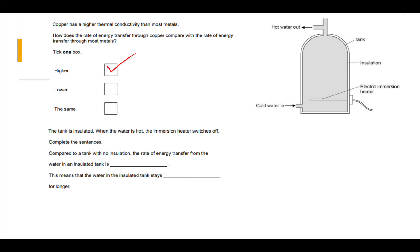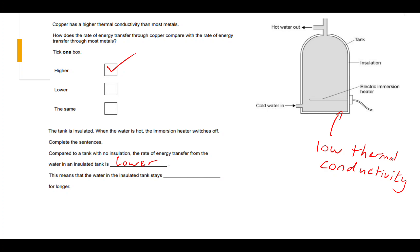The tank is insulated. When the water is hot, the immersion heater switches off. The immersion heater is what heats the water in your house. Compared to a tank with no insulation, the rate of energy transfer from the water in an insulated tank is lower — because the insulation surrounding it, like a jacket that goes over your tank, has a low thermal conductivity. So the rate of heat transfer out of an insulated tank will be less. This means the water in the insulated tank stays warmer for longer.